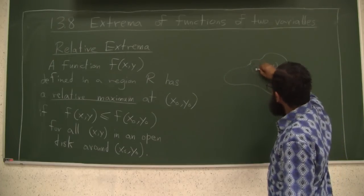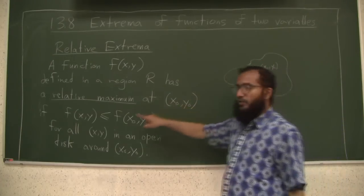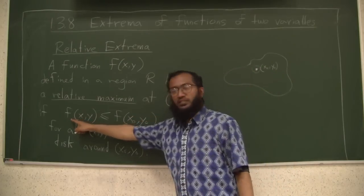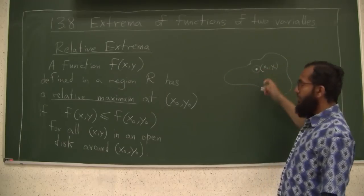So if you can find a disk such that all the points in this disk, their value at function under function f of xy is less than or equal to the value of the function at x0, y0.